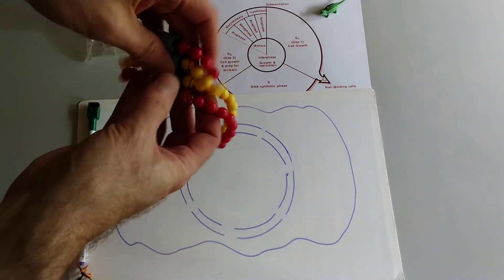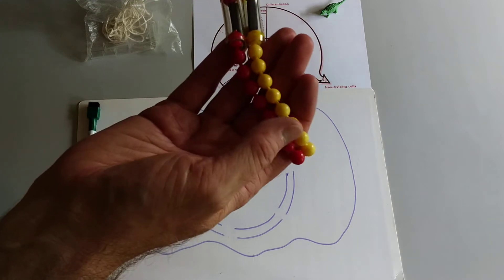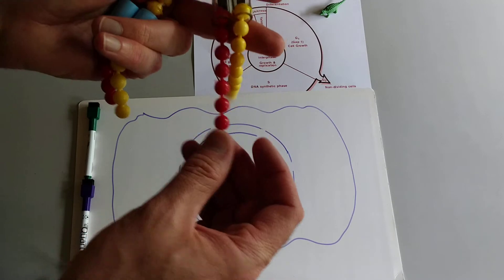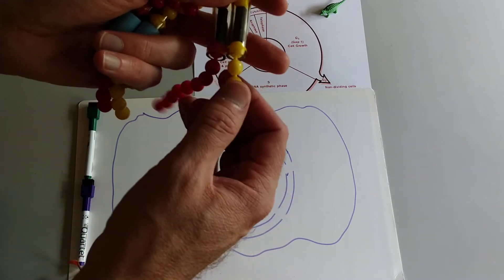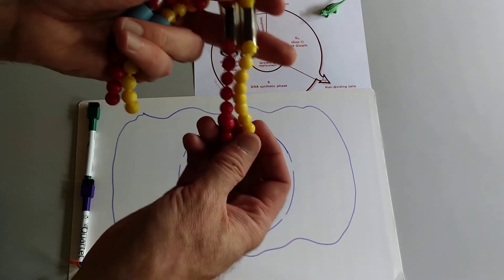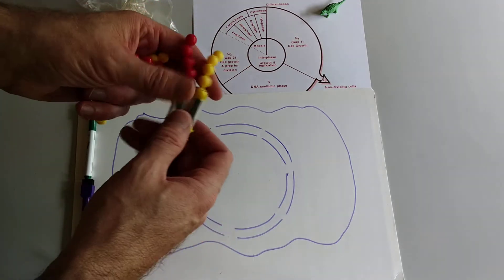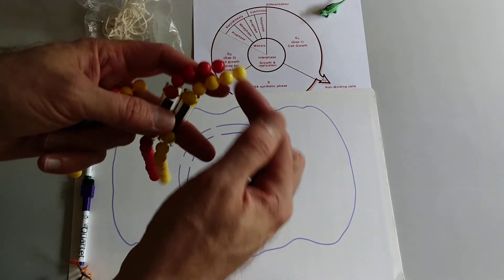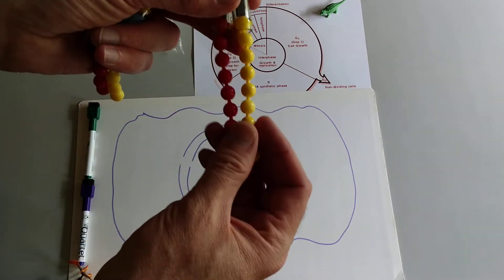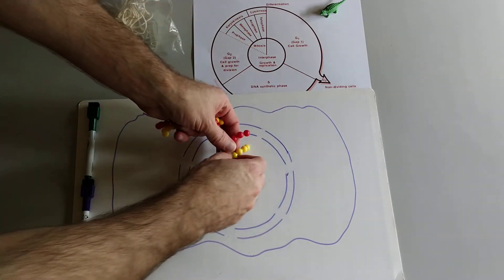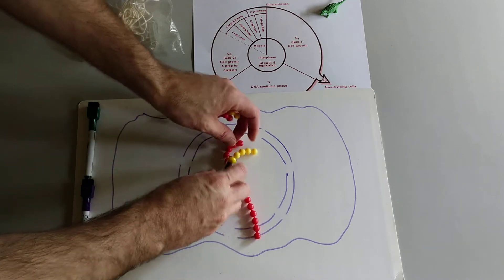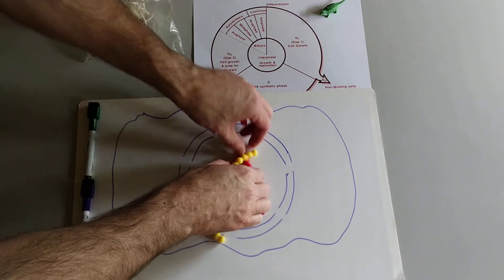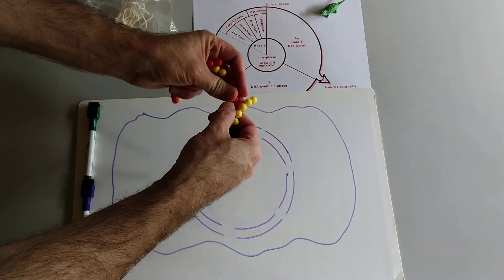We have these two long ones and we're going to say that the red one was the maternal chromosome and the yellow one was the paternal chromosome. And these might have slightly different genetic information for each gene which would be each bead here. But they have the same types of genes on them.